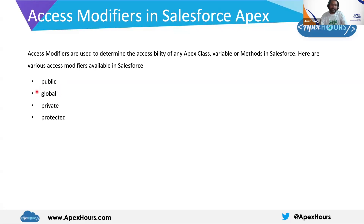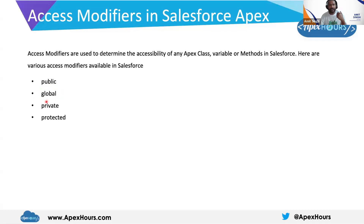Global is something which can be accessed within your Salesforce org as well as outside of your Salesforce org, depending on the settings you have configured for that class. For example, if there is a different system — it could be MuleSoft, Heroku, or any system — that needs to access your Salesforce org, you need to make that class global. You cannot make it public in that case.